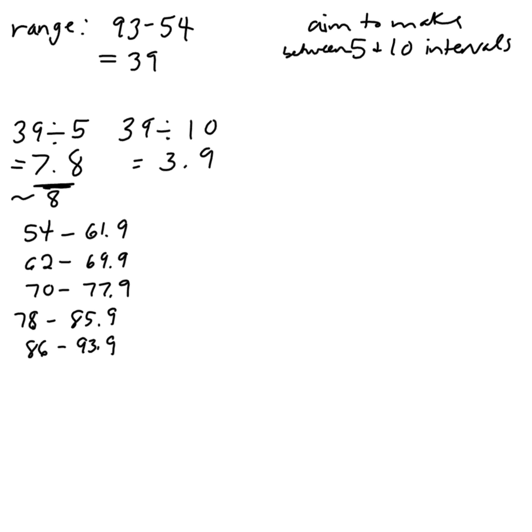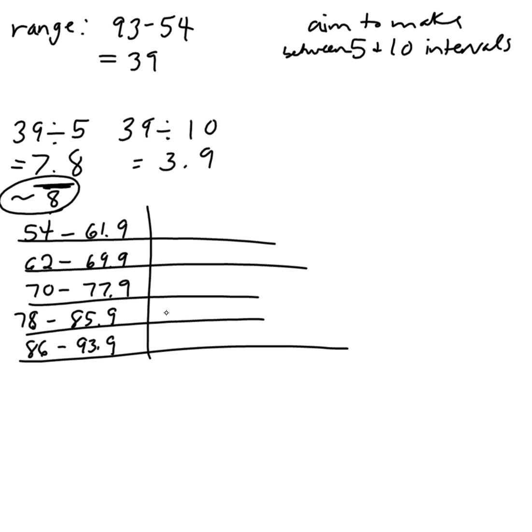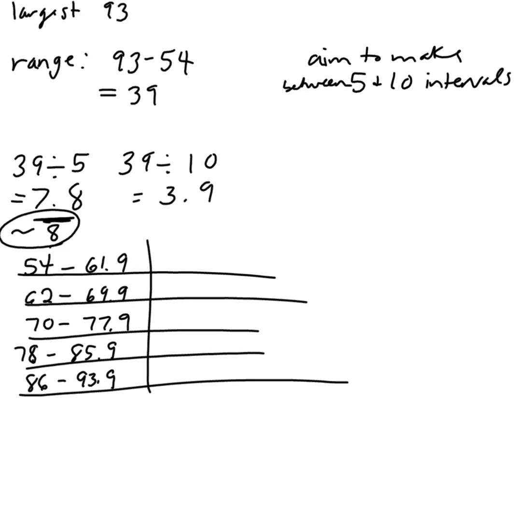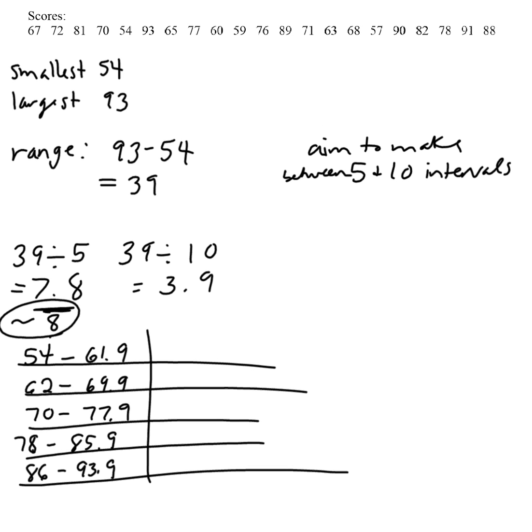And then that will pretty much take care of all my data. Notice I have 5 intervals. They are equally spread out. They are each a distance of 8 between them. And then I can make my little chart, and I can tally up so I can see how many people fall in this range, how many people fall in that range, and so on.